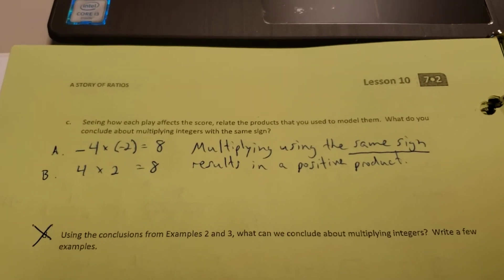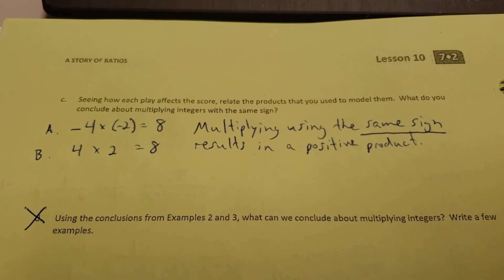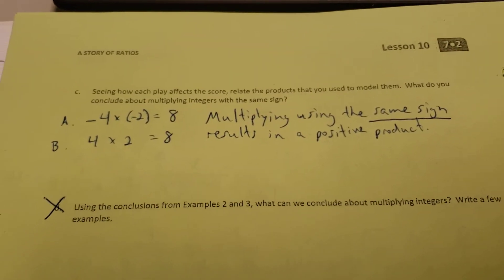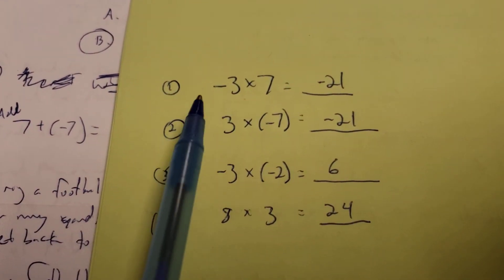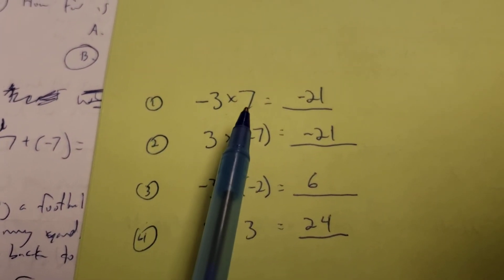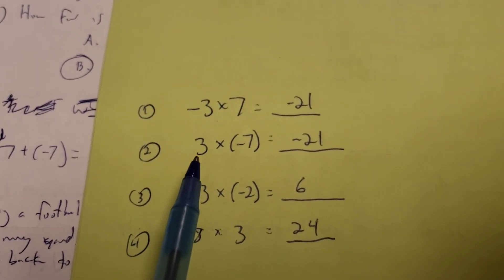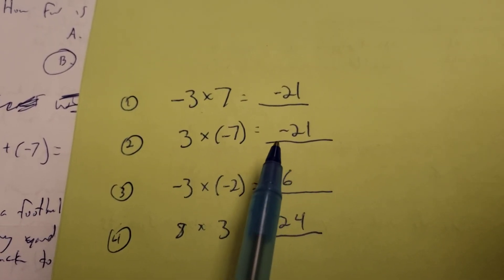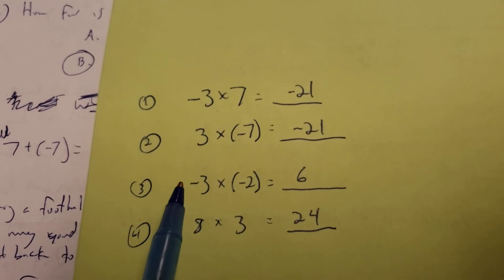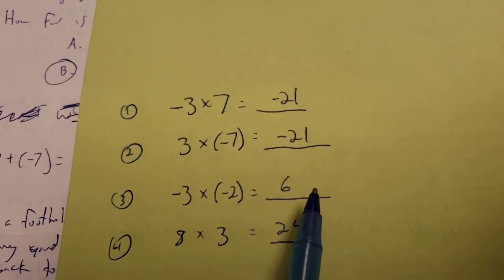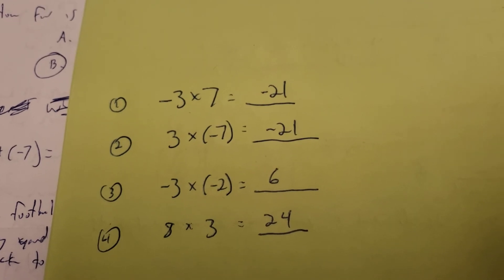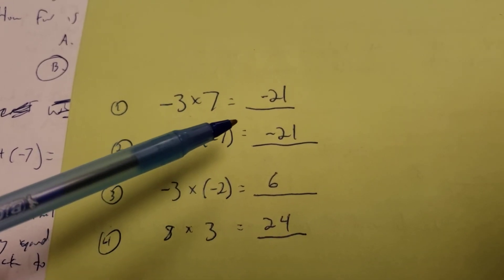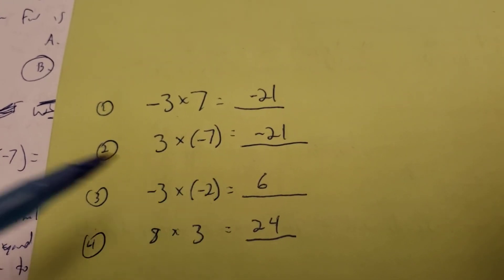The big idea to remember from today: if you multiply with opposite signs, you'll get a negative answer. If you multiply with both numbers having the same sign, it will be positive. For example, negative 3 times positive 7 — they have opposite signs — so it's going to be negative 21. It doesn't matter where the signs are; positive times negative are still opposite signs, so it's still negative 21. Negative 3 times negative 2 — same signs — gives me positive 6. And 8 times 3 gives me 24. Opposite signs give a negative answer; same signs give a positive answer.